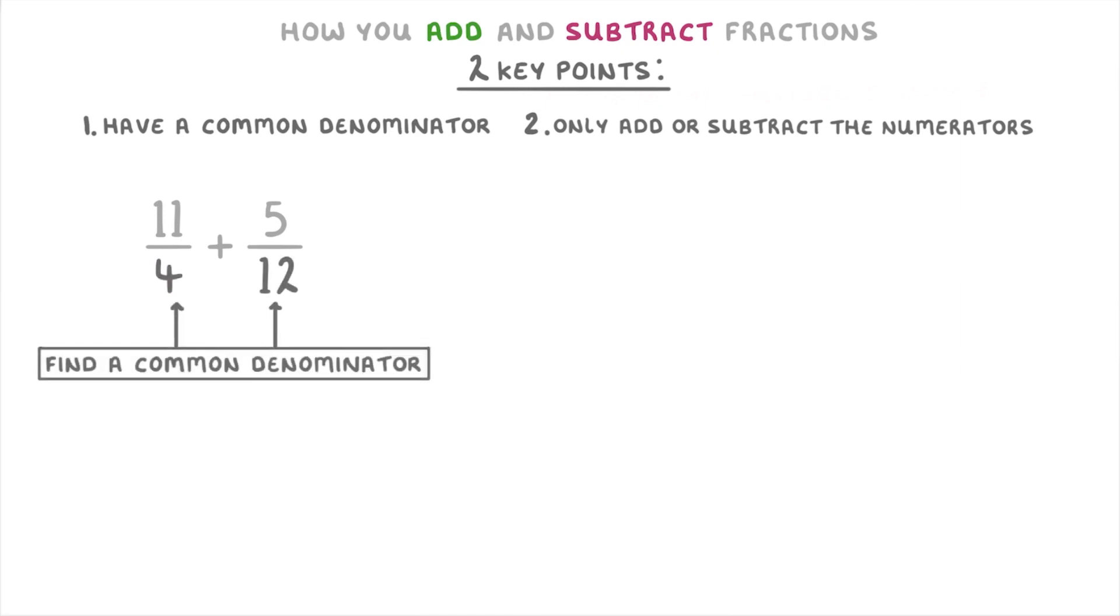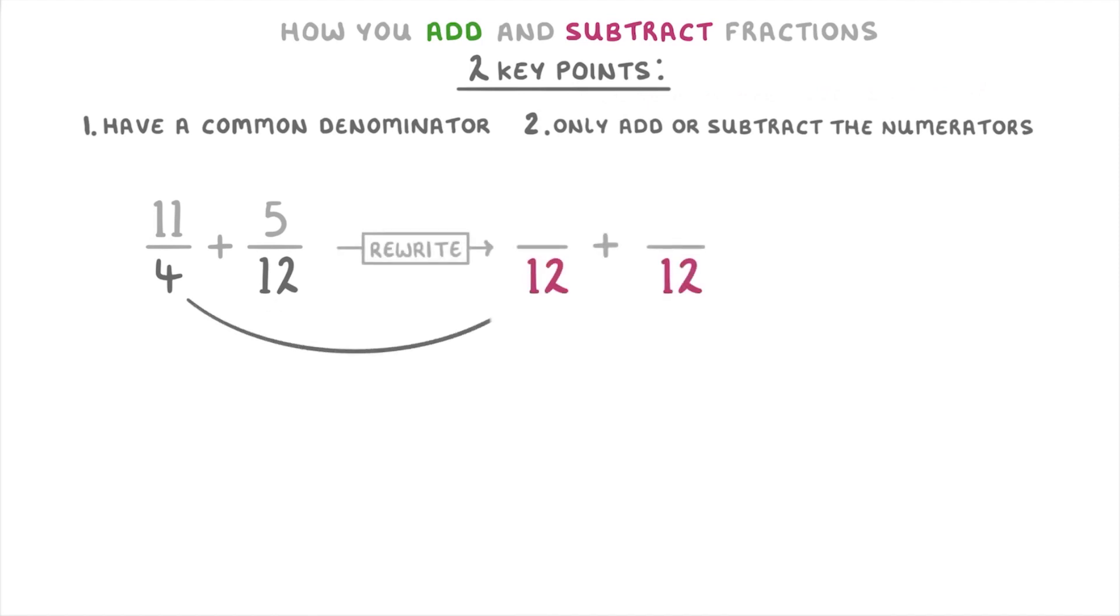Next we need to find a common denominator, so we find the lowest common multiple of 4 and 12, which is 12, and then rewrite the question. To get from 4 to 12 we have to multiply by 3, so we also multiply the 11 by 3 to get 33/12. 5/12 already has a denominator of 12 though, so we don't need to do anything to that one and we can just rewrite 5/12. Then last we just add the numerators together, so 33 plus 5 giving us 38/12, which we can simplify down to 19/6.